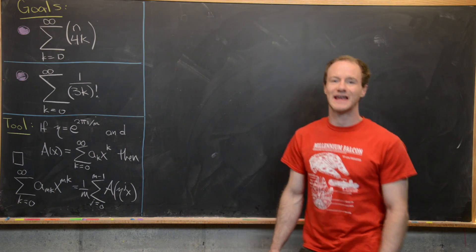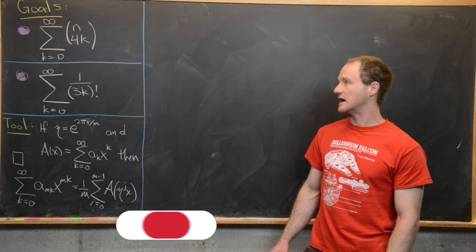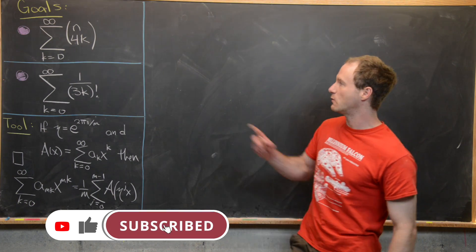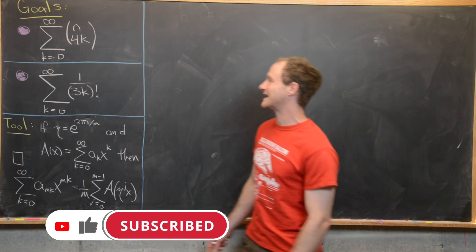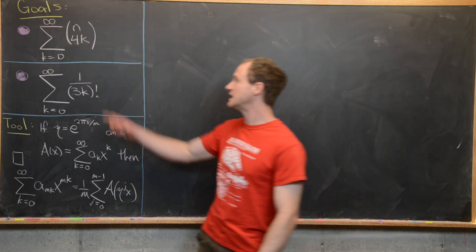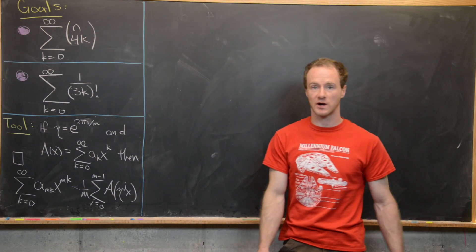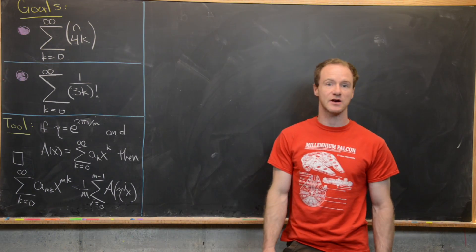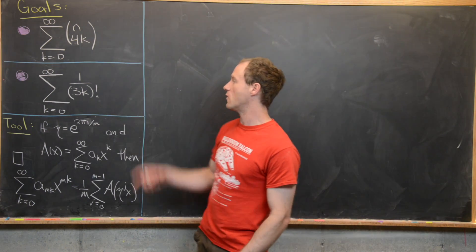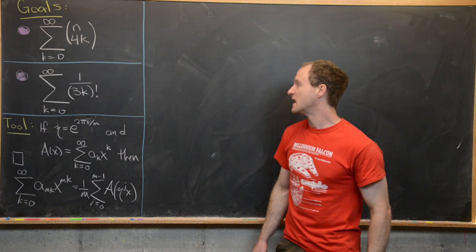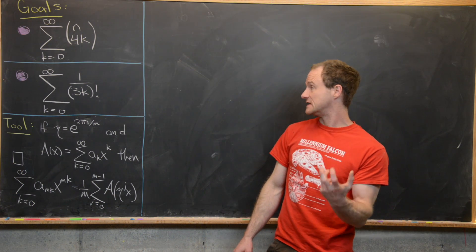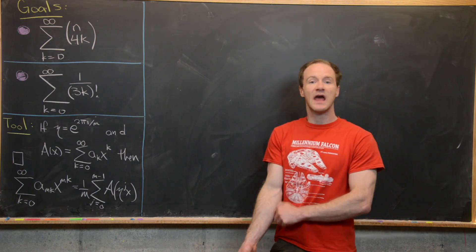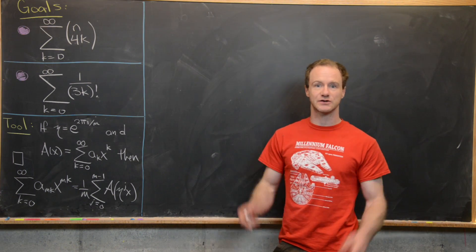Here we're going to look at two pretty interesting infinite sum identities. We will be exploring the sum as k goes from 0 to infinity of n choose 4k, and also the sum as k goes from 0 to infinity of 1 over (3k) factorial, where you're taking the quantity 3k factorial. We're going to use a combinatorial tool involving generating functions.